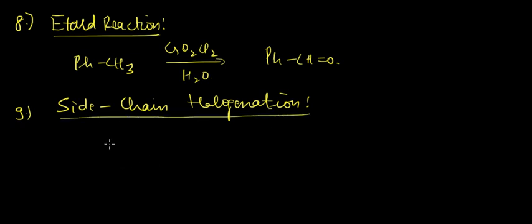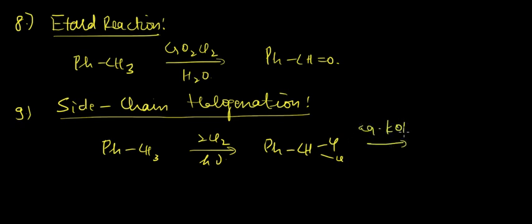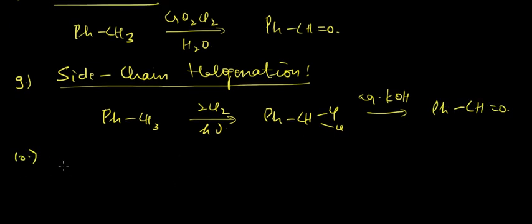Next we have side chain halogenation, in which we use toluene again with two moles of Cl2 under hν (light). We get first a CHCl2 group (dichloro) attached to the carbon atom, and then on hydrolysis we can get an aldehyde group.